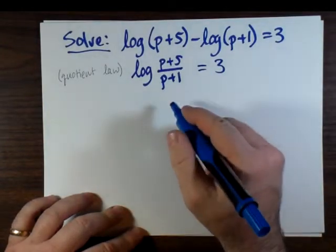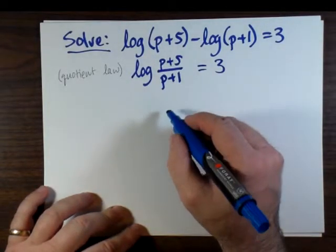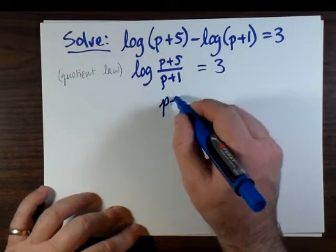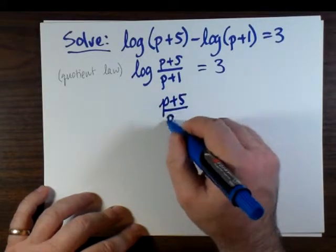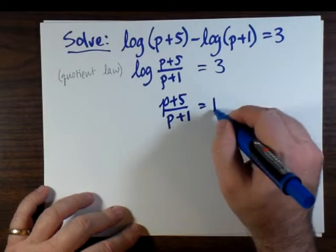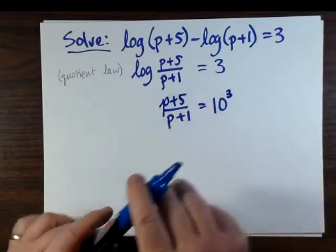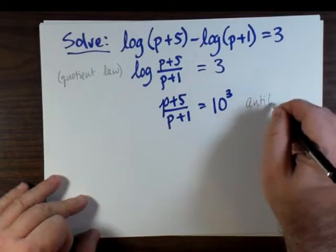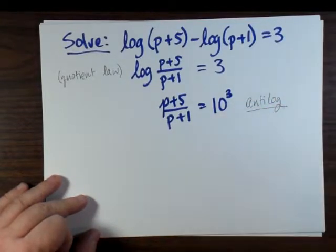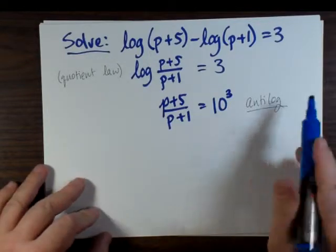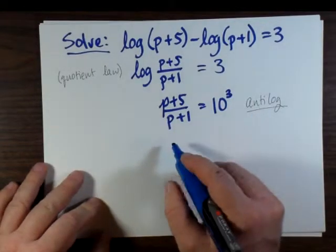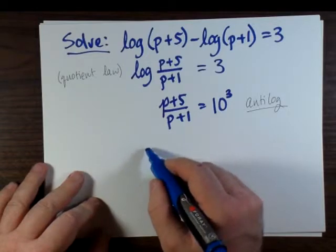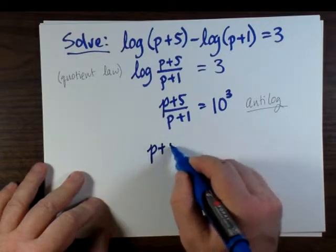And now we are free to take the antilog of both sides. That means we can now write this as p plus 5 over p plus 1 equals 10 to the 3. Taking the antilog of both sides means we've got to raise both sides as a power of 10. So the contents of what got passed into the log is now the actual number. And 3 becomes 10 cubed.